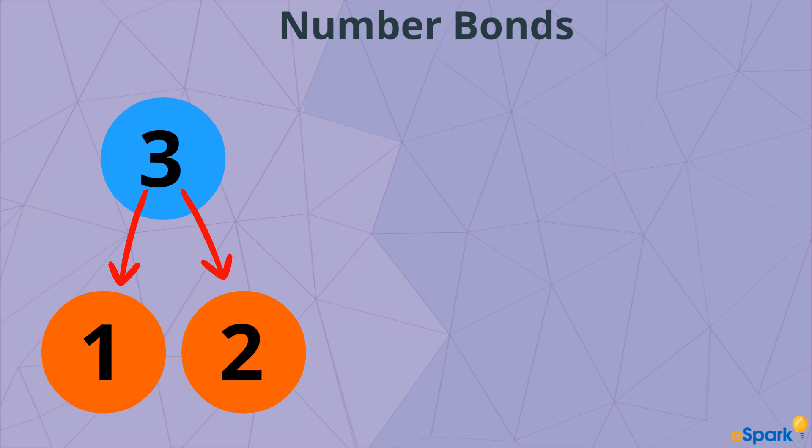One way to think about it is how you show numbers on your fingers. You can hold up 3 fingers like this to show 3, or you can hold up one finger on one hand and two fingers on the other. There are still 3 fingers.